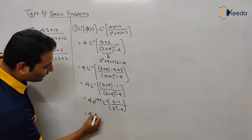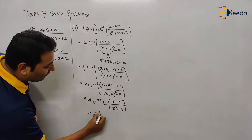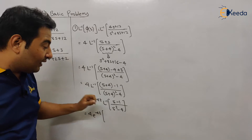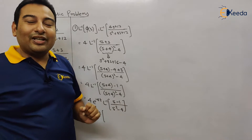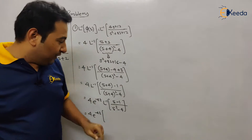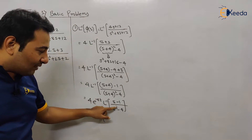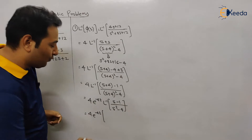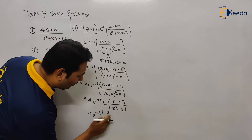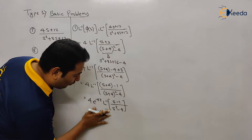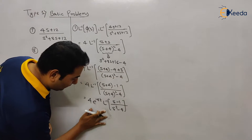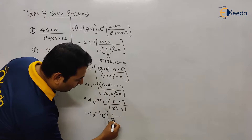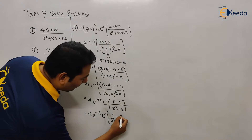Obviously you can separate the terms here. Separating, this will be s upon s squared minus four, minus one upon s squared minus four.